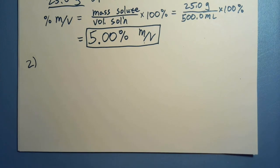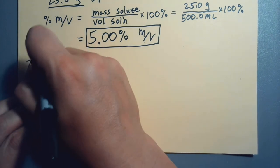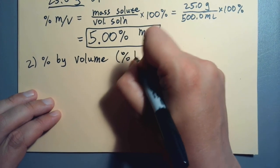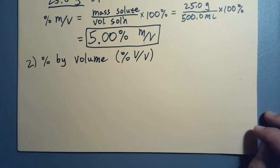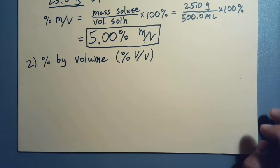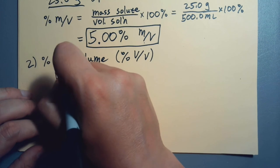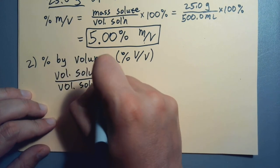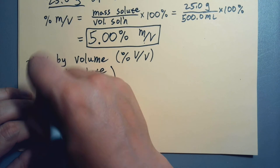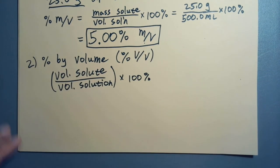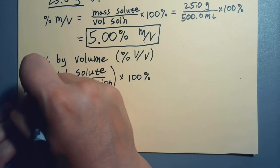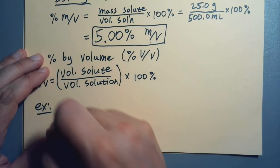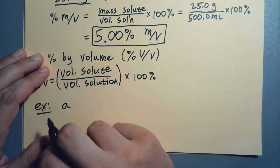Our second unit of concentration is going to be percent by volume. Also percent V over V. This is going to be volume of solute over volume of solution times 100%.